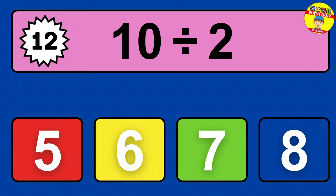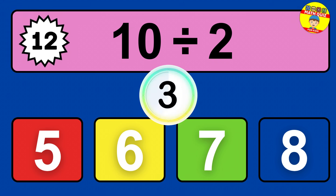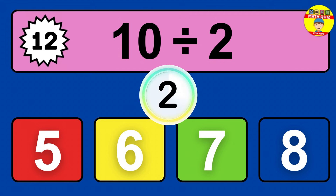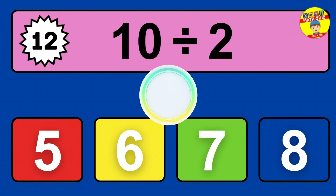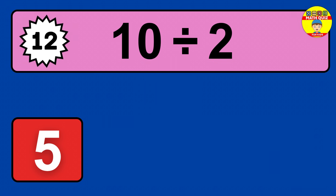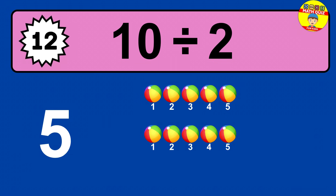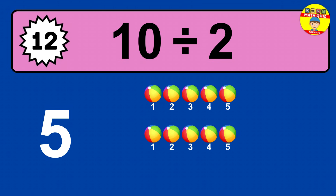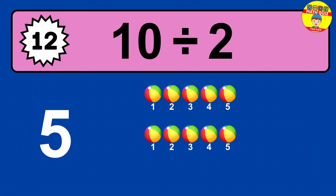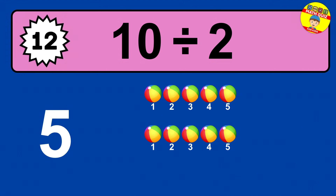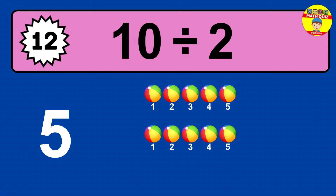10 divided by 2 — time to think. Let's go to the solution. Divide the number 10 by 2. Each group contains 2 units, so dividing 10 by 2 results in 5 equal groups. Thus, the result is 10 divided by 2 equals 5.